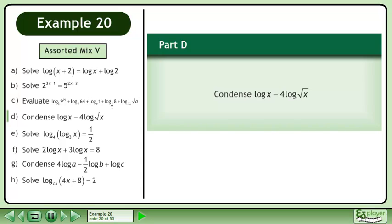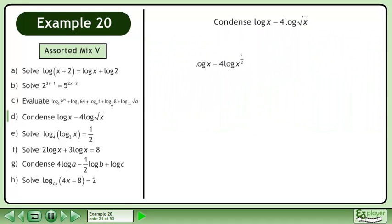In Part D, condense log x - 4 log(√x). Write the radical as an exponent. Expand using the power law. Simplify.